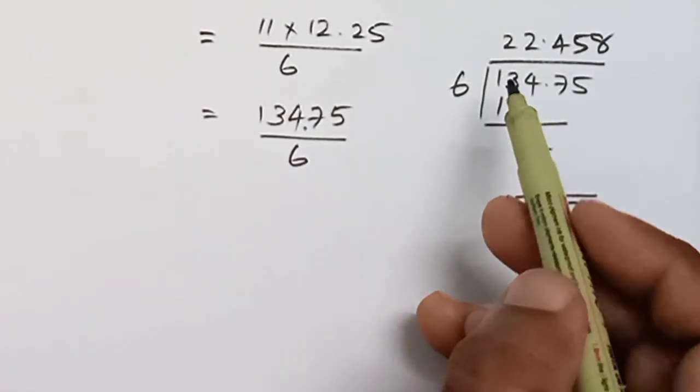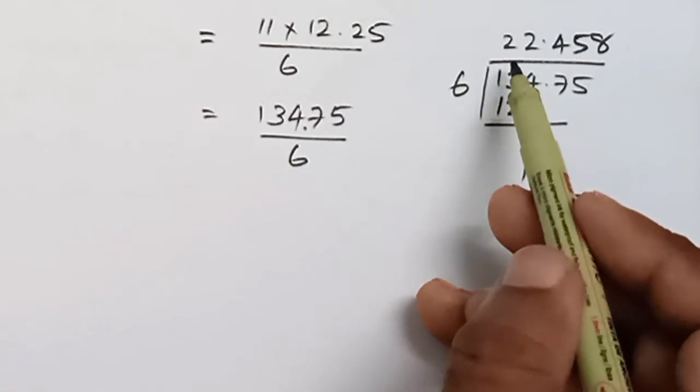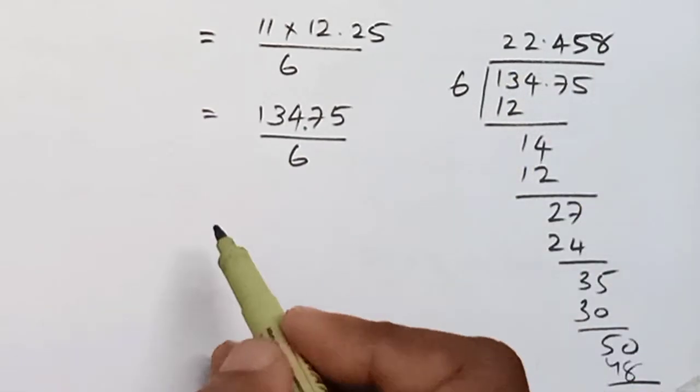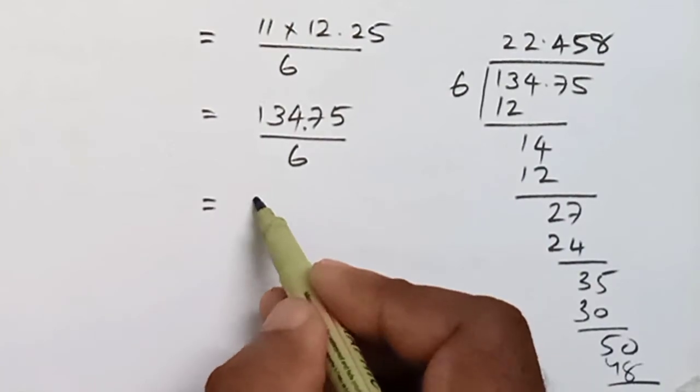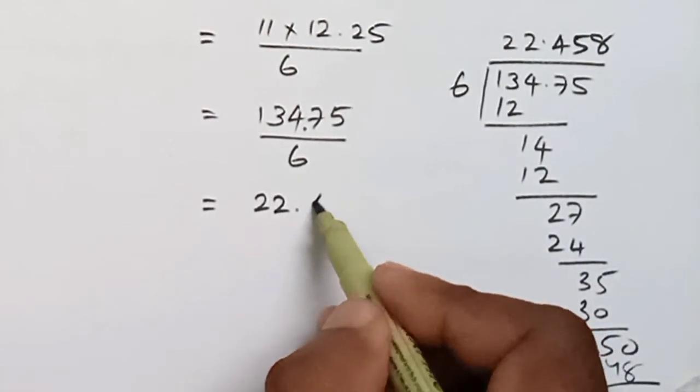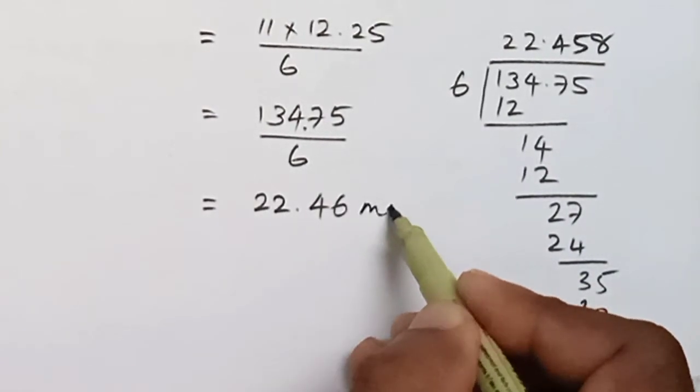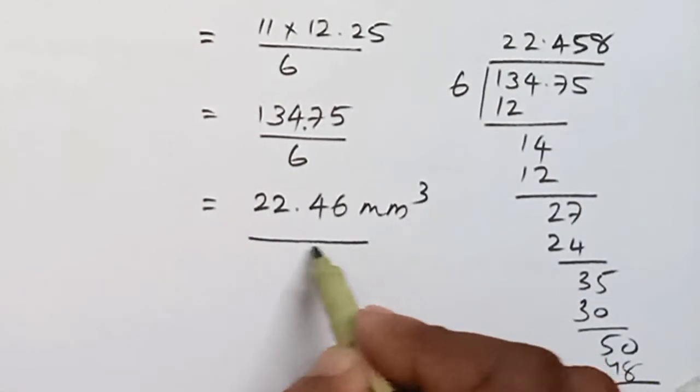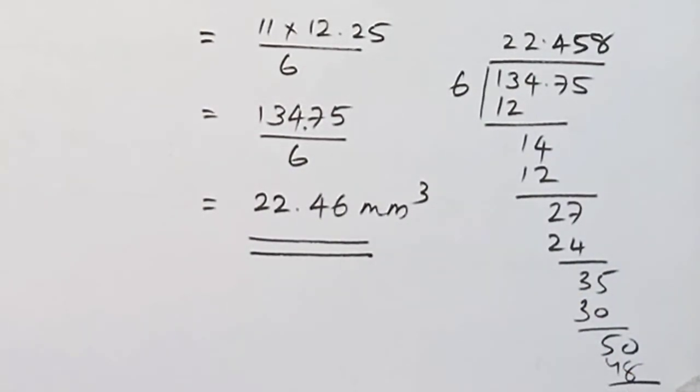So we can take 22.458 that will be 22.46 mm cubed. That is the medicine needed to fill the capsule is 22.46 mm cubed.